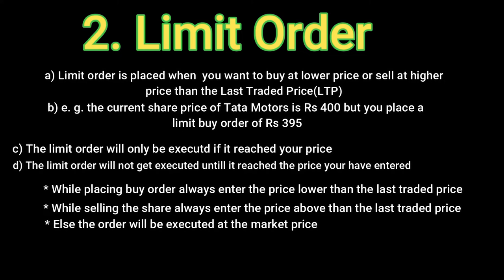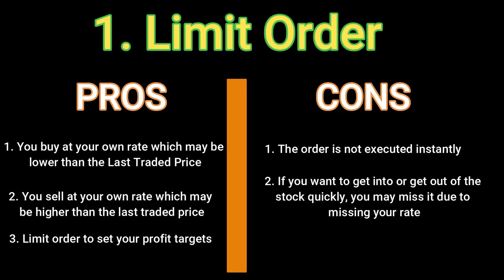What are the pros and cons of limit orders? Pros: you buy at your own rate which may be lower than the last traded price, and you sell at your own rate which may be higher — so you can buy cheap and sell high. Limit orders are also used to set your profit targets. If you bought shares at 10 rupees and want to target 12, place a limit order — the moment it reaches 12, it will be executed. Cons: the order is not executed instantly. Limit orders only get executed when the price reaches your level. So if you want to get in or out of a stock very fast, use a market order, not a limit order.